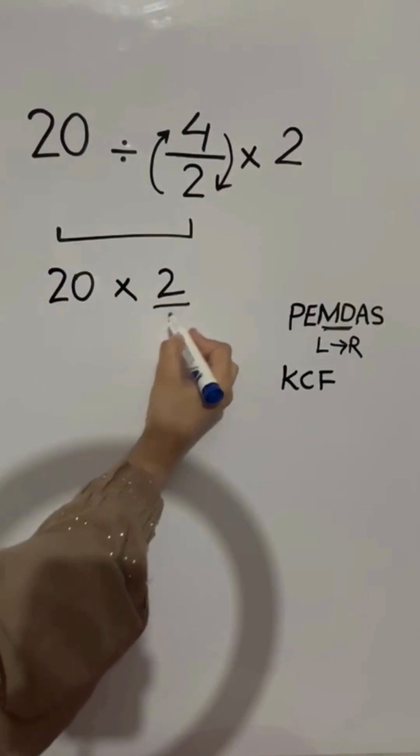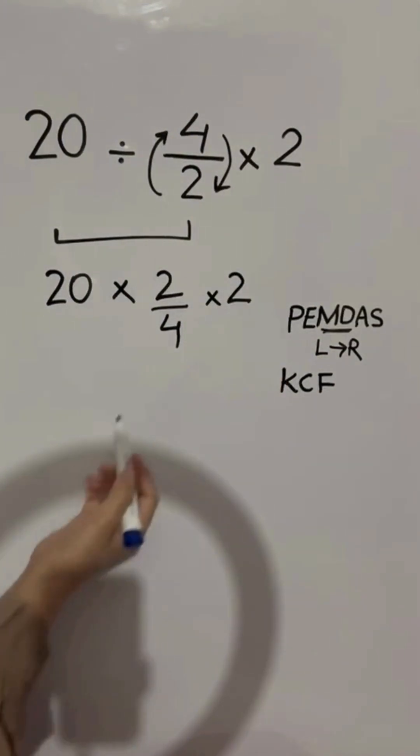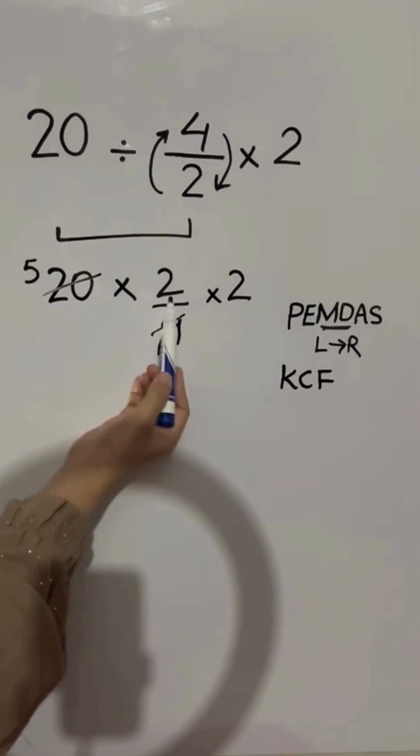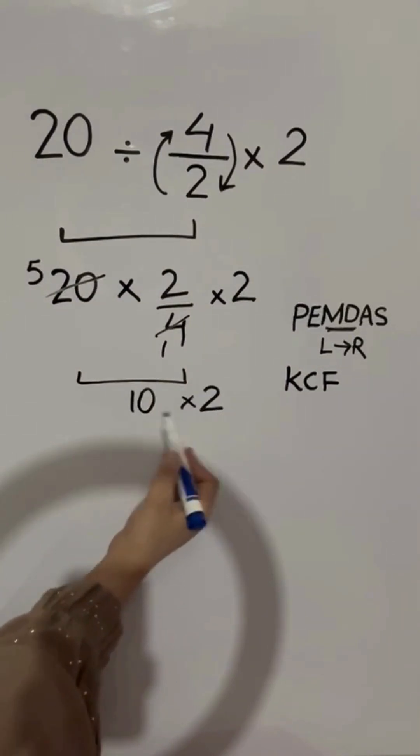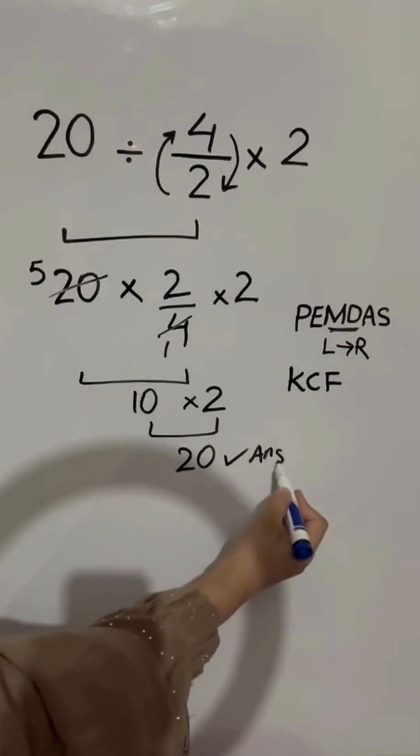So we have 20 by 2 over 4, and again here we have times 2. Now 20 divided by 4 gives us 5. So we have 5 by 2 which equals 10. Finally 10 times 2 which equals 20. And this is our final answer to this problem.